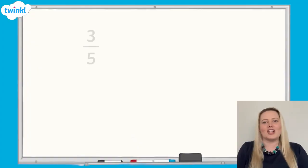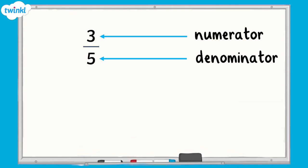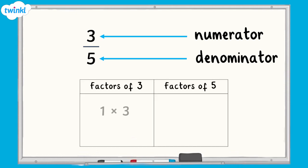Here we have the fraction 3 fifths. Do 3 and 5 have a common factor? 3 only has two factors, 1 and 3. And 5 only has two factors also, 1 and 5. Which means they are both prime numbers. This means that the common factor of 3 and 5 is 1.